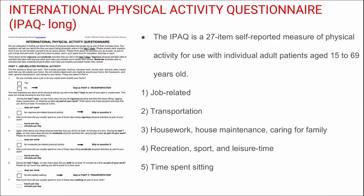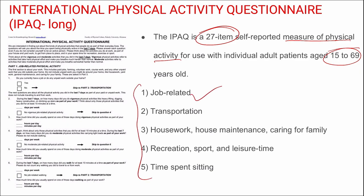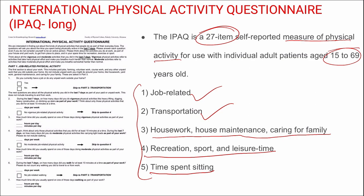The IPAQ Long Form is a 27-item self-reported measure of physical activity for individuals aged 15 to 69 years. Compared to the three domains in IPAQ Short, IPAQ Long has five domains: job-related, transportation, housework and house maintenance and caring for family, recreation/sports and leisure time, and time spent sitting. Thus, household activity and time spent sitting are new domains added in the long form.